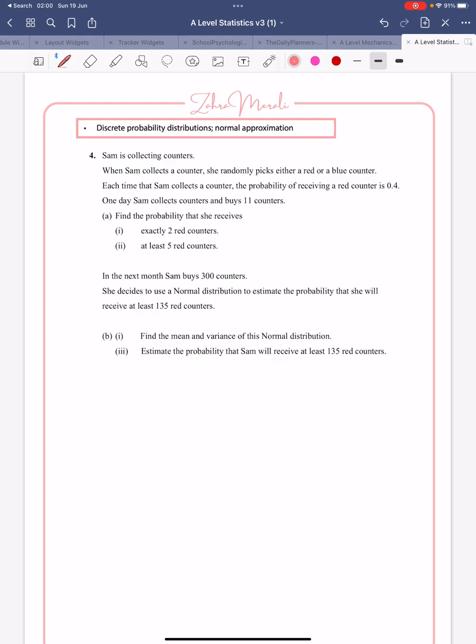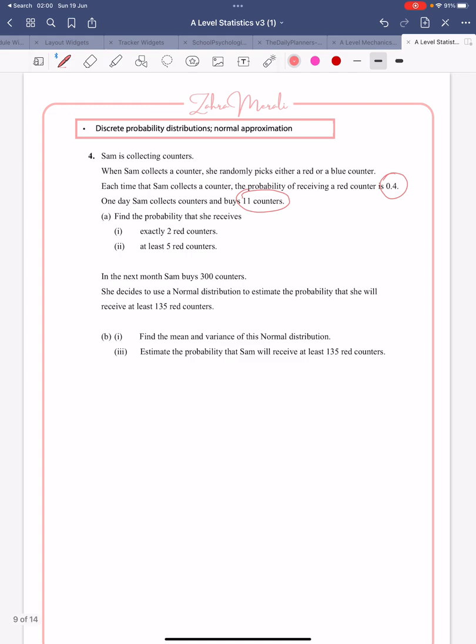When Sam collects a counter, she's picking red or blue. We've got a probability and we've got a set number of trials. So straight away, we know it's binomial 11, 0.4. And part A, we want the probability x equals 2. And for part 2, we want at least, so at least means greater than or equal to.